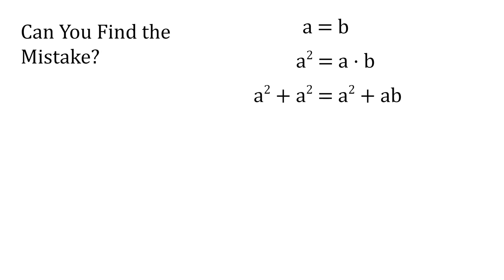Now we add a squared to both sides, and we get a squared plus a squared equals a squared plus ab. Now a squared plus a squared equals 2a squared, so we get 2a squared equals a squared plus ab.